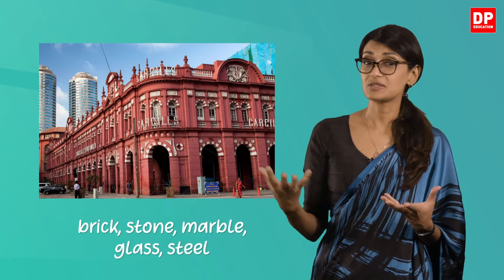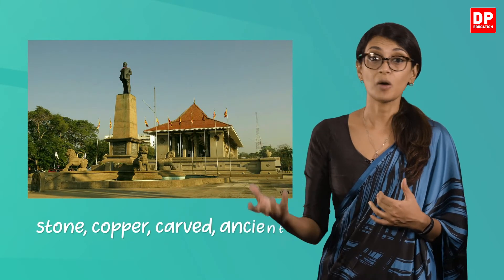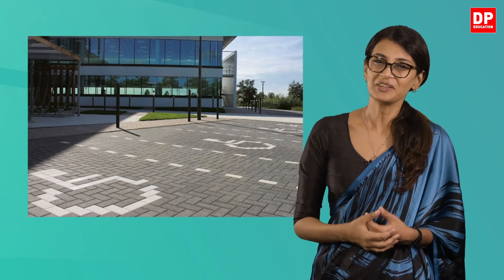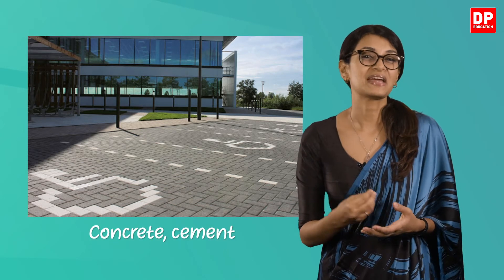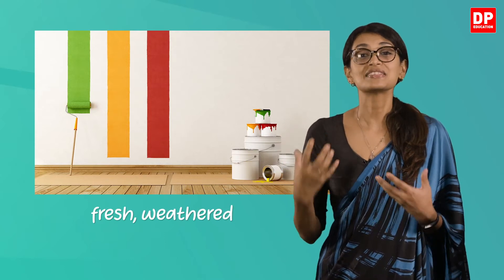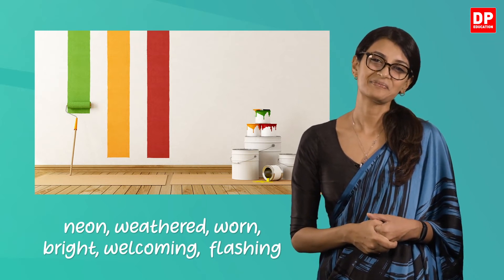When describing the traffic in Colombo, you can use words like loud and congested. For buildings, you can say the walls are made of brick, stone, marble, glass or steel. Monuments or statues can be described as stone, copper, carved, ancient, moss-covered, faded, green or bronze. Pavements can be concrete, cement, tidy or littered. The paint on walls can be fresh or weathered, and signs on the road can be neon, weathered, worn, bright, welcoming or flashy. You can also look for synonyms in a thesaurus.